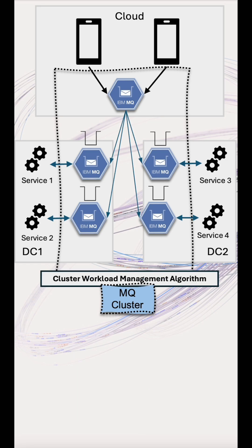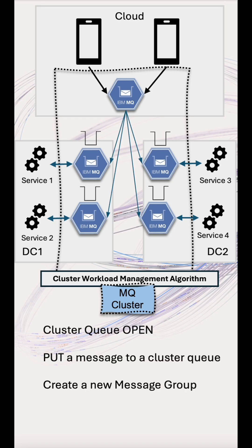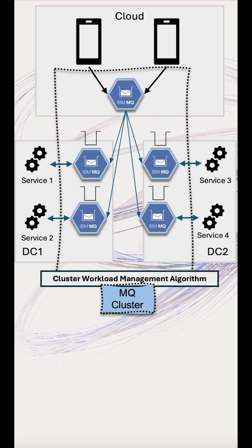This algorithm runs when we do one of four actions: open a cluster queue, put a message to a cluster queue, create a new message group, or reallocate messages when a channel goes down. IBM MQ also supports publish-subscribe interaction patterns using topics, where topic host routing works largely the same, but for this video, we'll focus on queues.